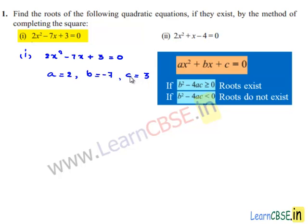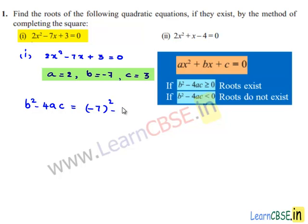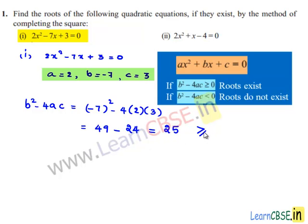So let us find the discriminant b² minus 4ac. b² minus 4ac is equal to (minus 7)² minus 4 times 2 times 3. This is equal to 49 minus 24, which gives 25, which is greater than or equal to 0.